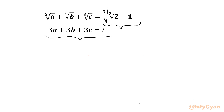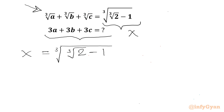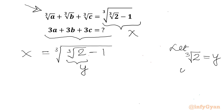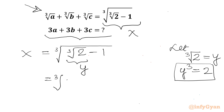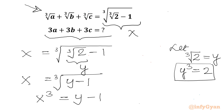So in other words, we have to write the RHS in terms of a sum of three cube roots. Let's proceed by considering RHS equal to x, so x equals cube root of (cube root 2 minus 1). Let cube root 2 equal to y, so y³ = 2. Then cube root of (y minus 1) equals x, and cubing both sides gives x³ = y minus 1. Two important results: x³ = y − 1, and y³ = 2.